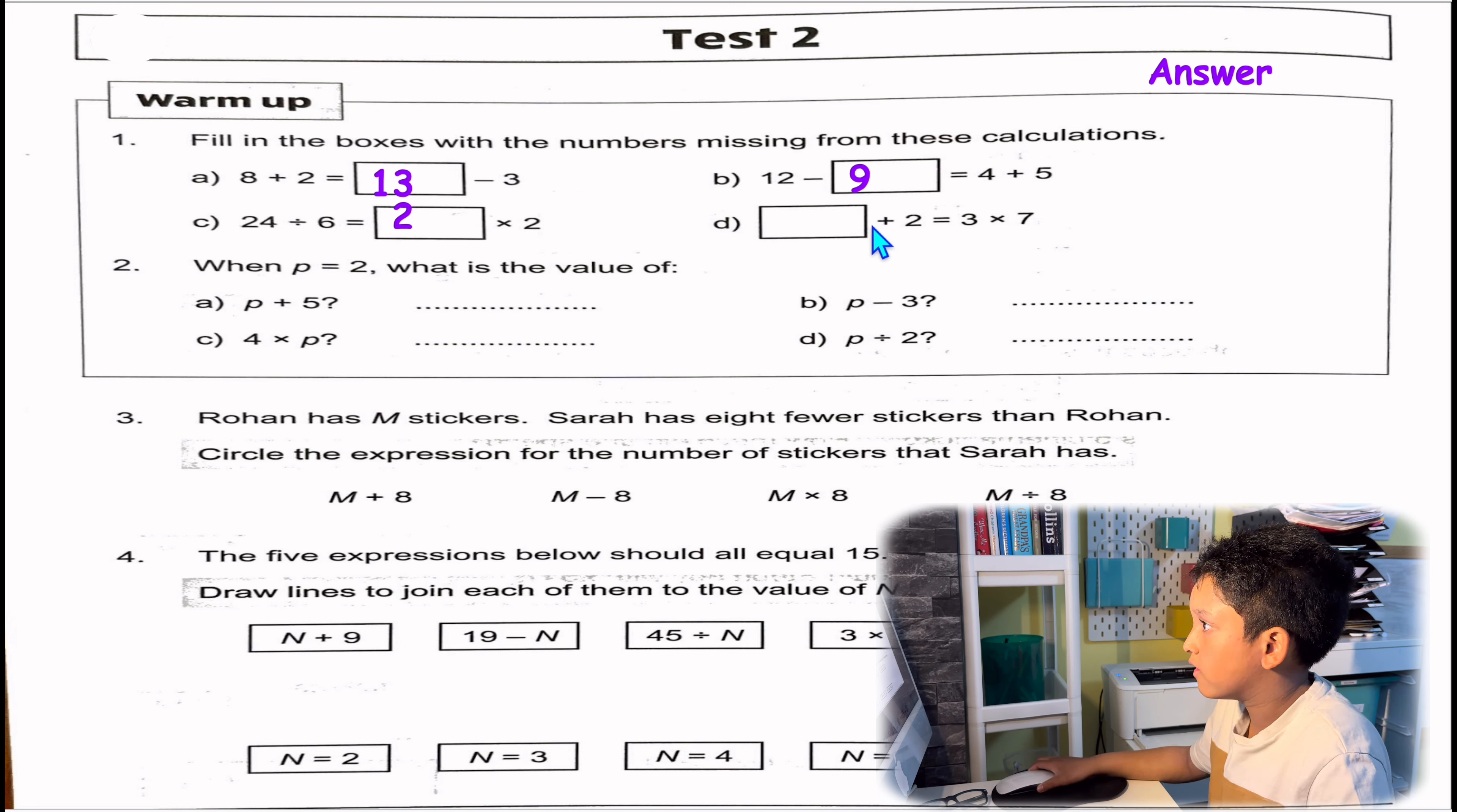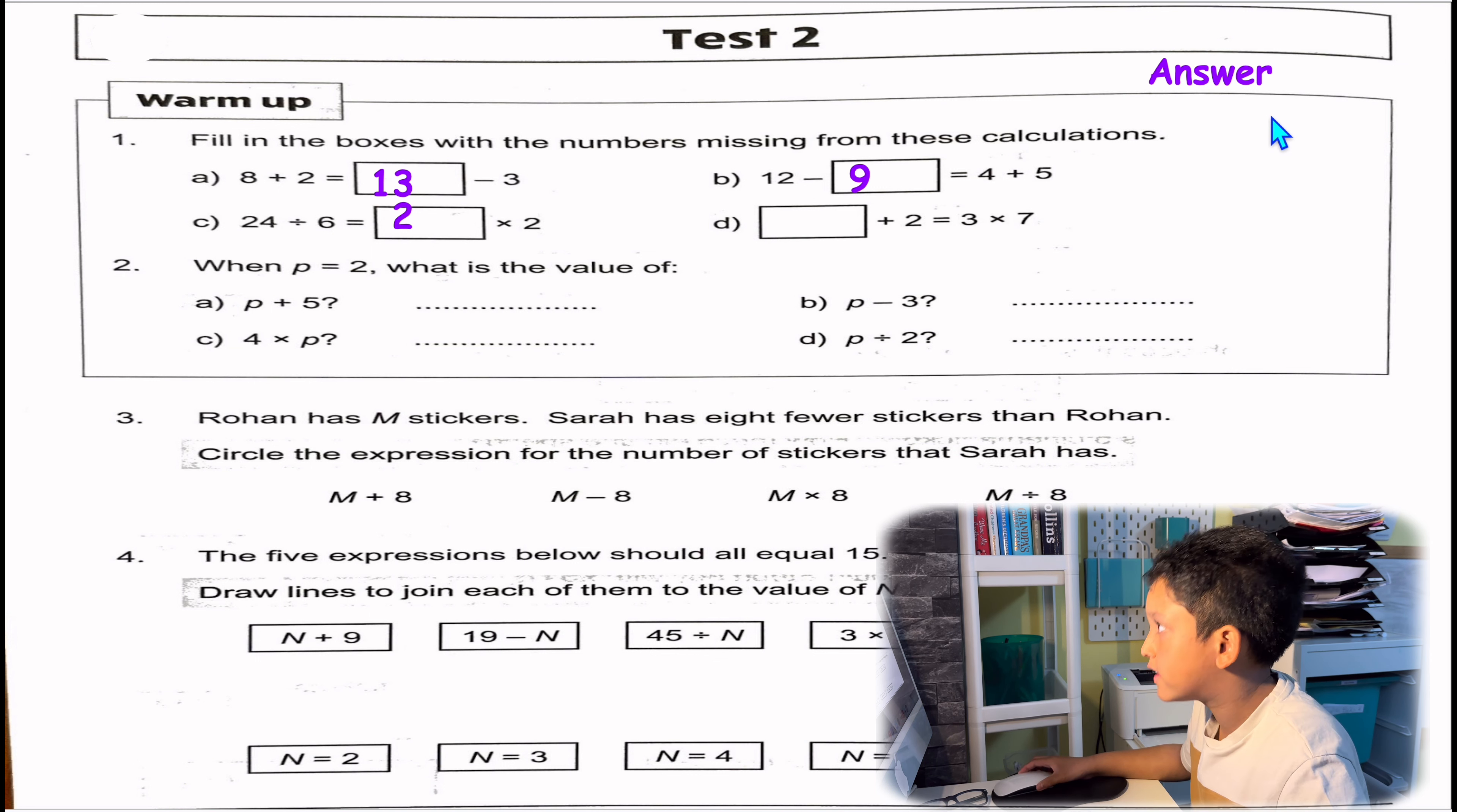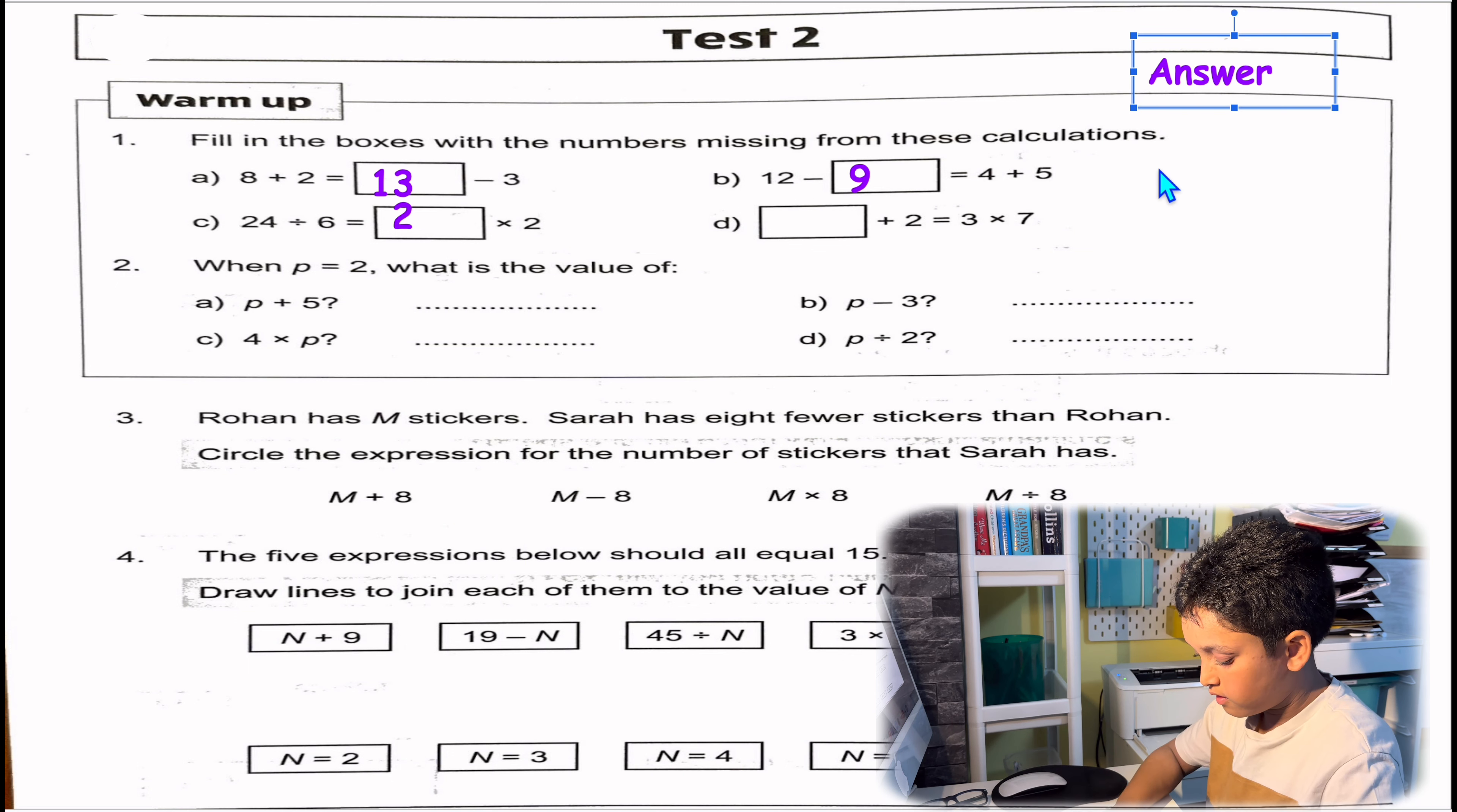Part D: Something plus 2 equals 3 times 7. 3 times 7 is 21. So 21 take away 2 will give us 19.